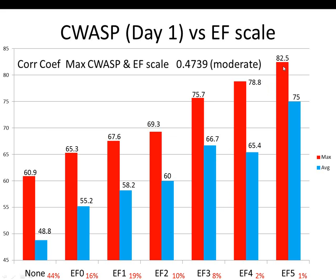Looking at EF scale — splitting events by highest EF scale observed — the correlation jumps back up to moderate, approaching 0.5, the highest correlation I found. There does seem to be some skill: the higher the value, the better chance of strong or violent tornadoes. The maximum the other day in Oklahoma and Kansas was 85, and there was an EF-4 in central Kansas within one or two CWAs of the maximum.